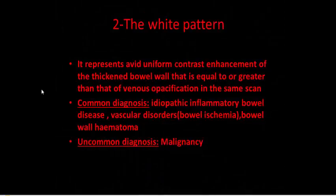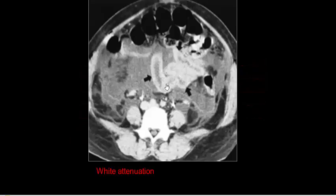The white pattern represents uniform contrast enhancement of the secondary bowel wall equal to or greater than venous opacification on the same scan. Common diagnoses for the white pattern include IBD — idiopathic inflammatory bowel disease — vascular disorders like bowel ischemia, bowel wall hematoma, and malignancy. An example shows contrast enhancement of the wall equal to or more than venous opacification, as seen in IBD.